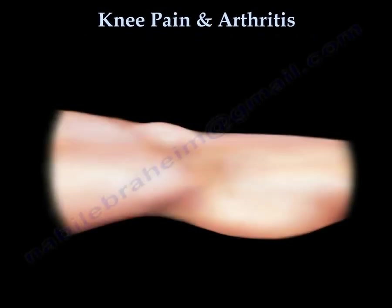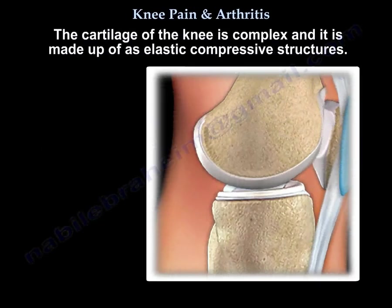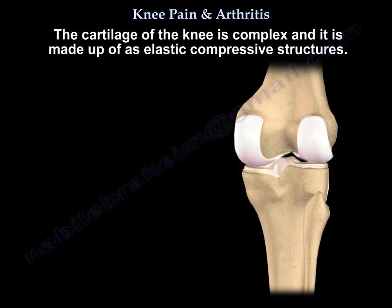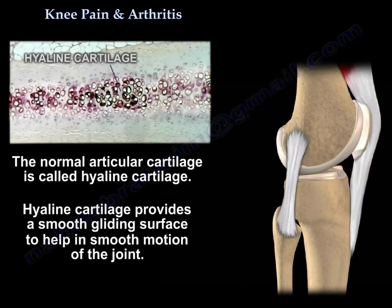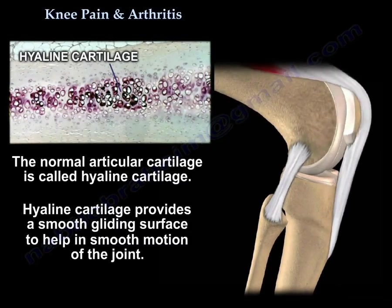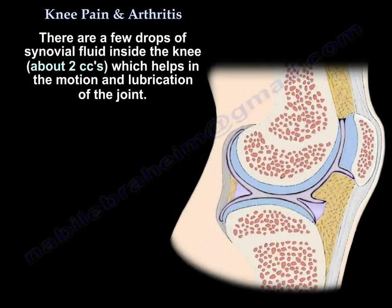Knee pain and arthritis. The cartilage of the knee is complex and it is made up of elastic compressive structures. The normal articular cartilage is called hyaline cartilage, which provides a smooth gliding surface to help in the smooth motion of the joint. There are a few drops of synovial fluid inside the knee, about 2 cc's, which helps in the motion and lubrication of the joint.